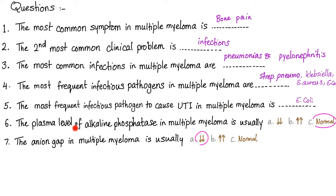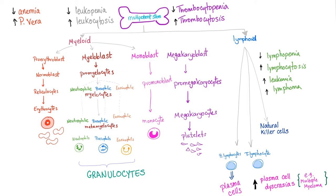The most frequent pathogen to cause urinary tract infection in multiple myeloma is E. coli. Alkaline phosphatase in plasma cells is normal. The anion gap in multiple myeloma is usually low. The plasma cell is a problem with B lymphocytes, which are of the lymphoid lineage of the hematopoietic stem cells.